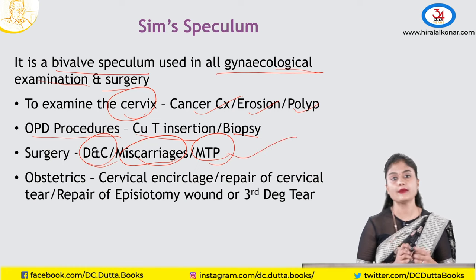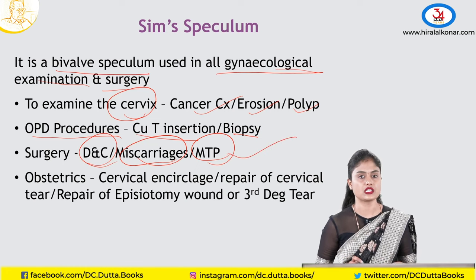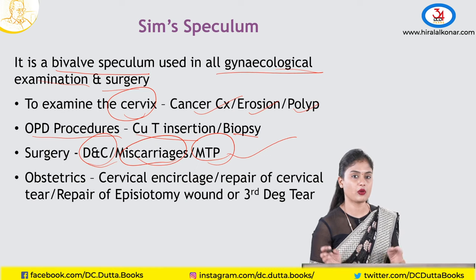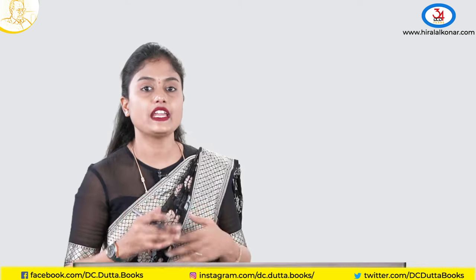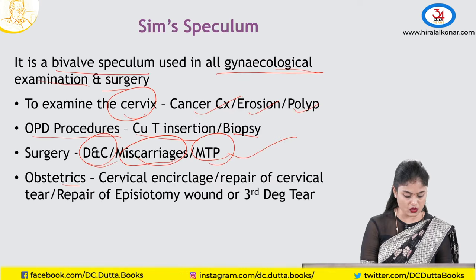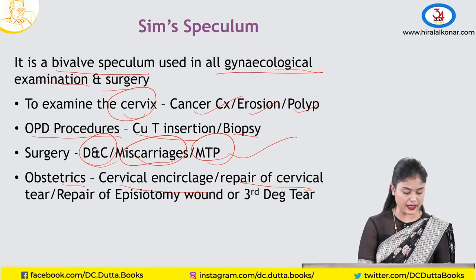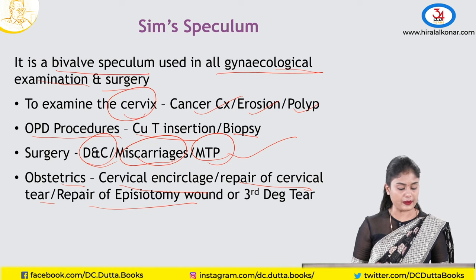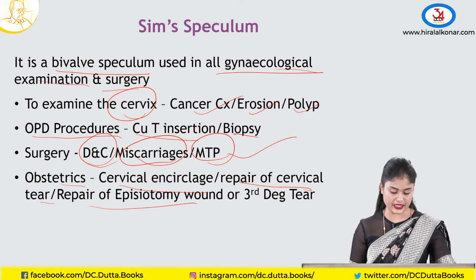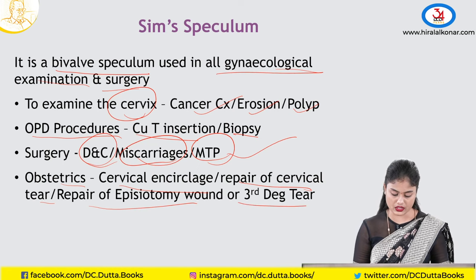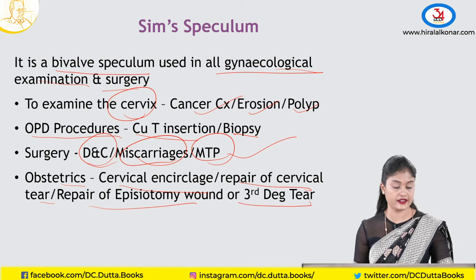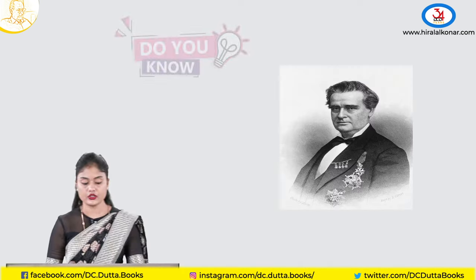In surgeries like DNC, miscarriages, or MTP — dilatation and curettage or suction curettage — this instrument is used for every procedure. In obstetrics, for any vaginal procedure like cervical cerclage, repair of cervical tear, repair of episiotomy wound of any degree, we use this instrument.